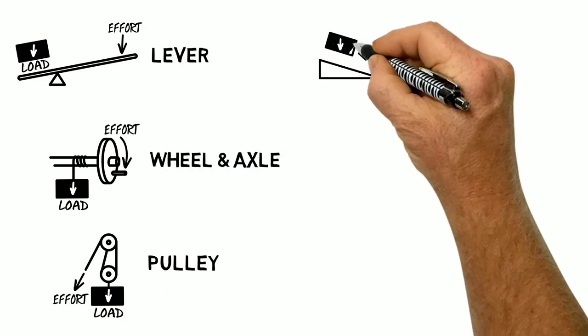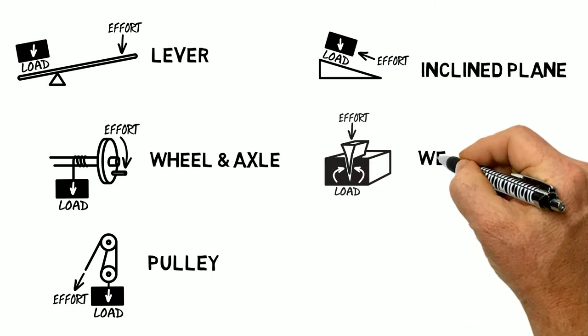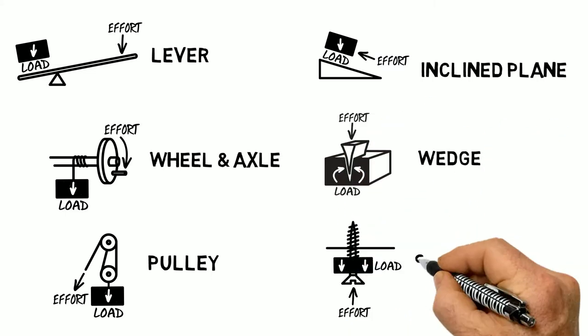The six machines are the lever, the wheel and axle, the pulley, the inclined plane, the wedge, and the screw.